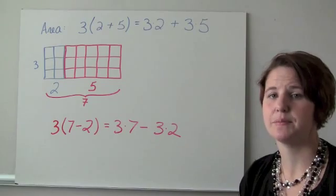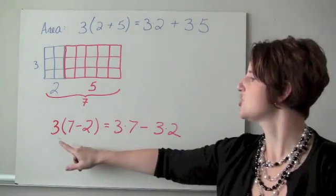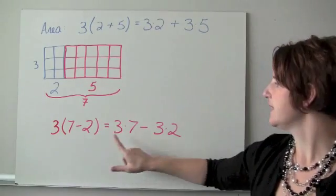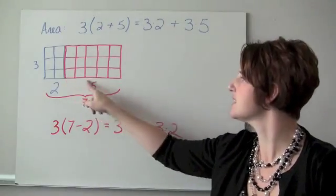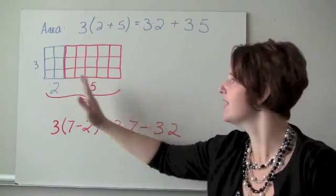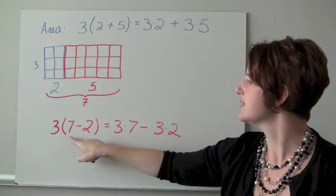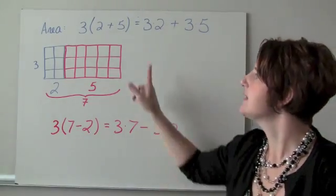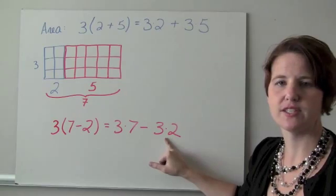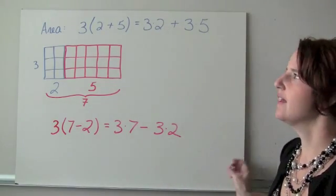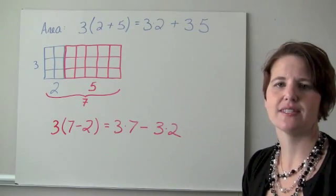The same picture can show the distributive property of multiplication over subtraction. Three times the quantity (7 minus 2) equals 3 times 7 minus 3 times 2. Seven minus two is five, so I had a full 7 and cut off 2, leaving 5 — that's the red rectangle. We can also take the entire 3 by 7 rectangle and subtract the blue 3 by 2 rectangle to get the same area. It's important to model these properties to help students understand why they're true.